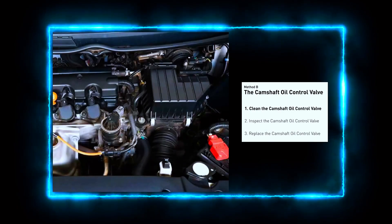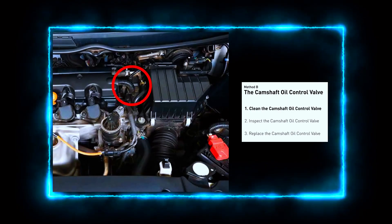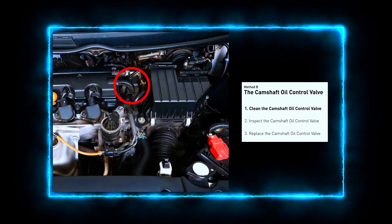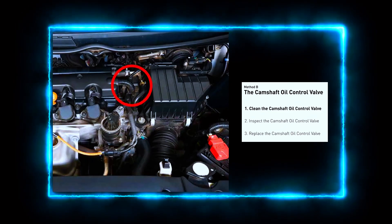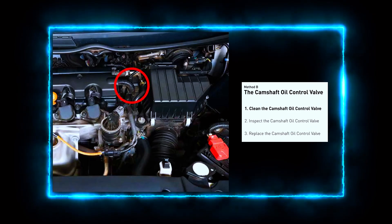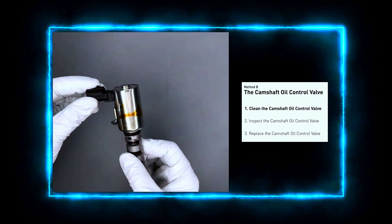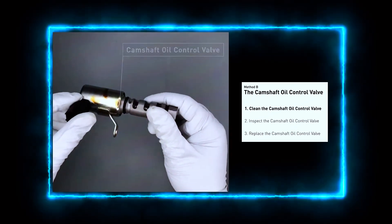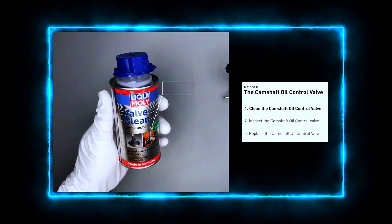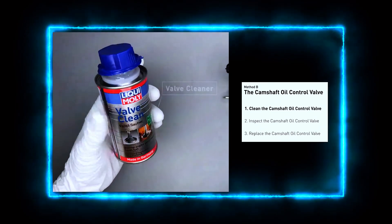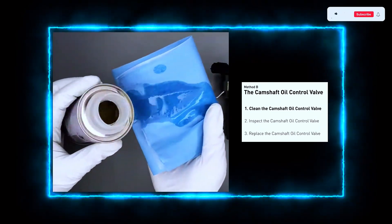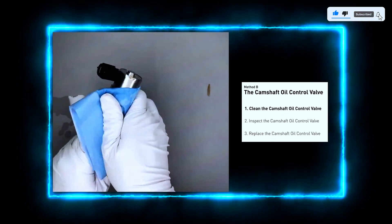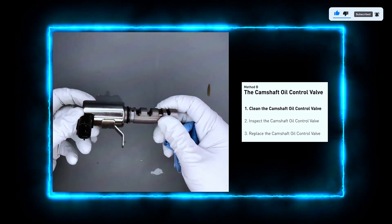Locate the camshaft oil control valve. Depending on your vehicle, it's usually mounted on the cylinder head near the camshaft, bolted to the engine block with an electrical connector attached. Clean the oil control valve using brake cleaner or electrical contact cleaner spray. Clean the valve thoroughly to remove any dirt or sludge buildup, making sure to clean the valve's filter and any passages. Wipe it down with a clean cloth and let it air dry for a few minutes.